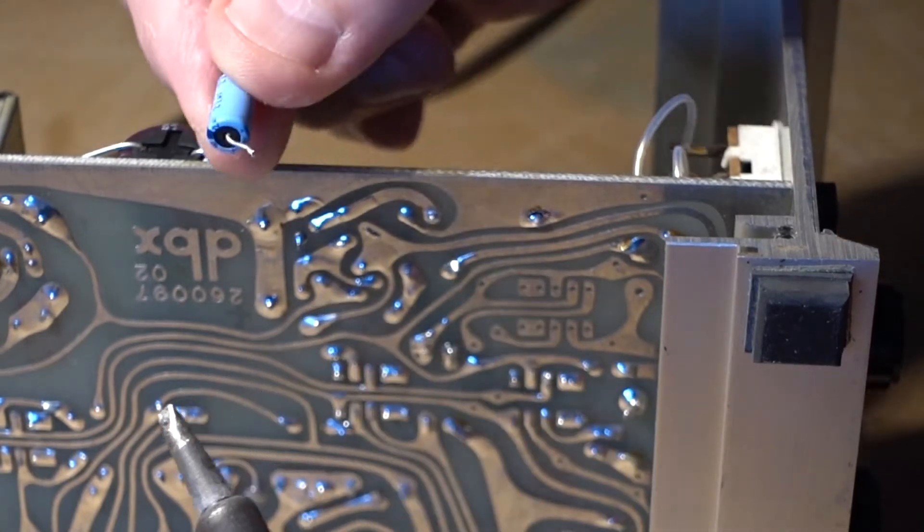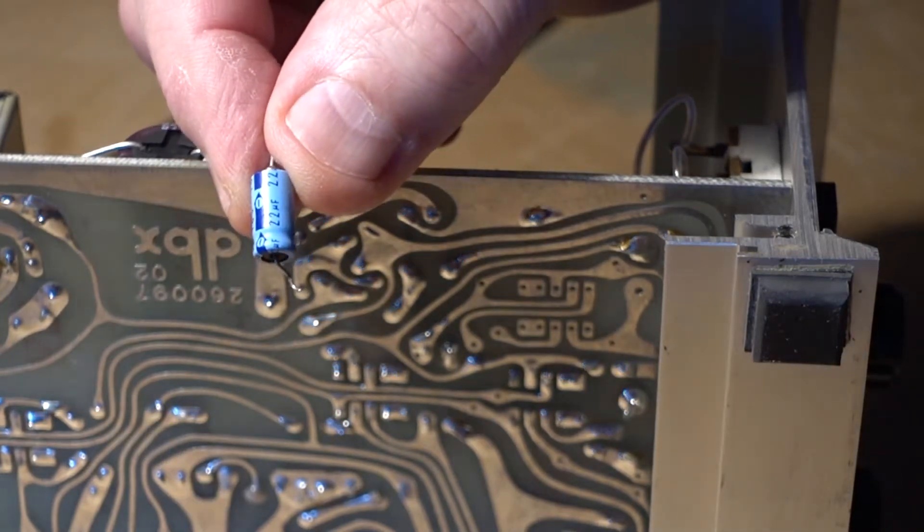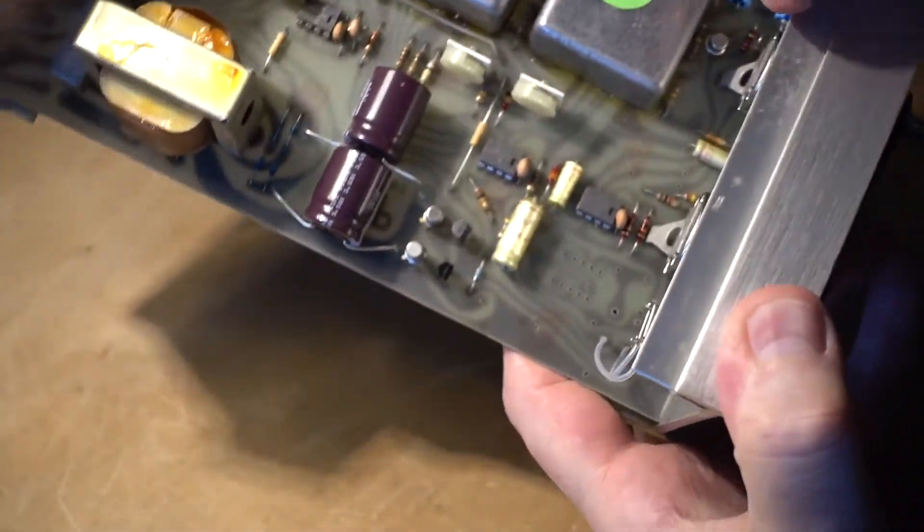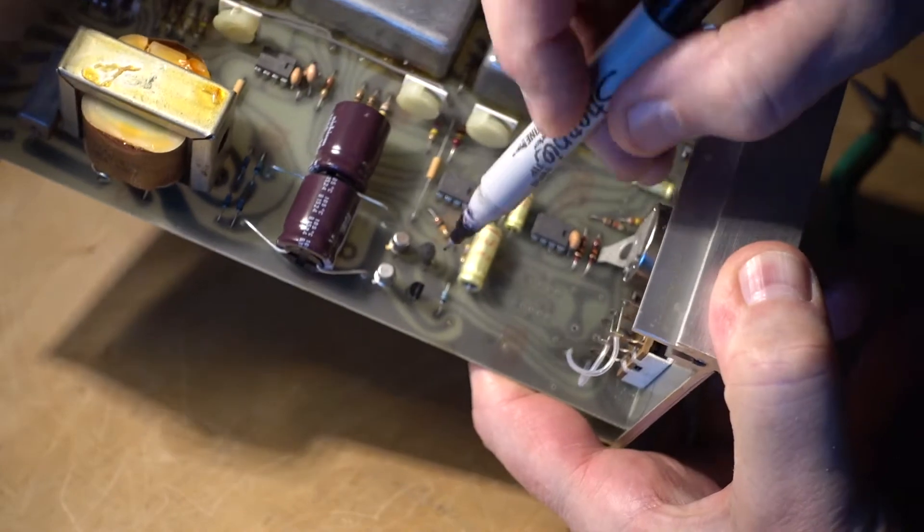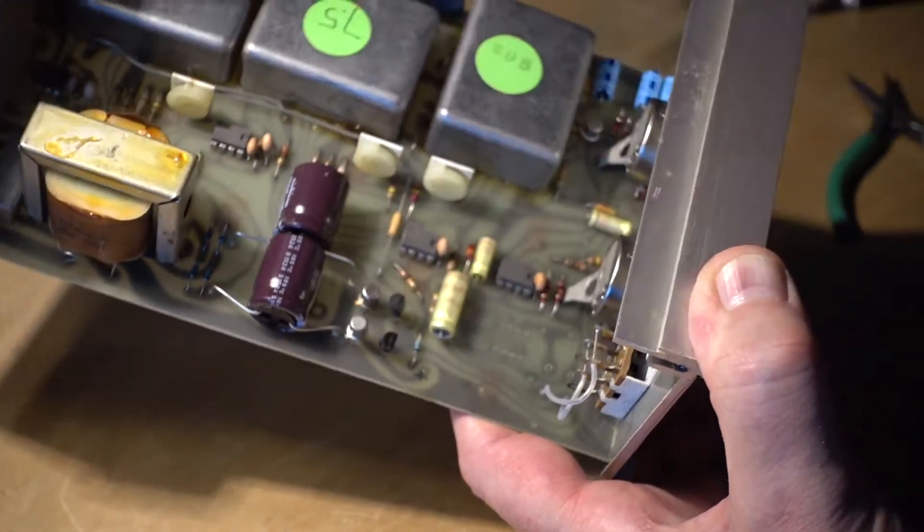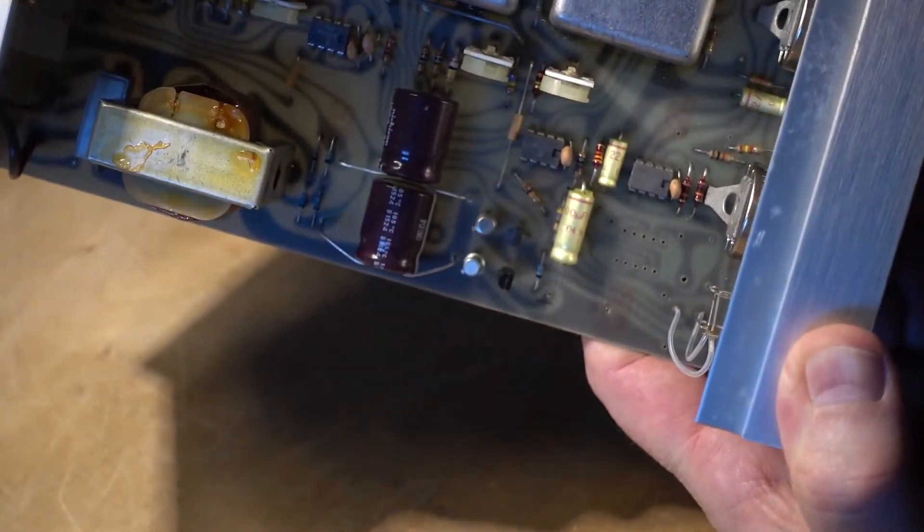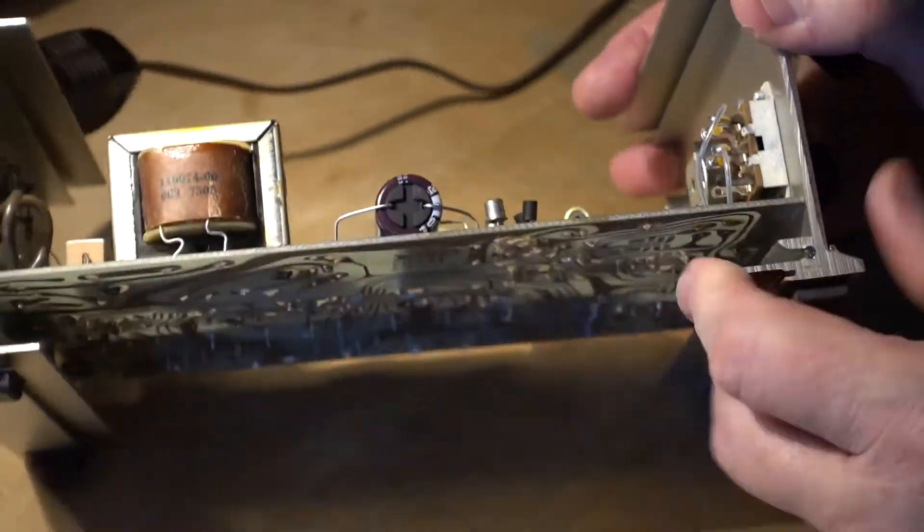Now we have to clean up the holes, make them ready for inserting the new capacitor. But before, always double check the polarity. Electrolytic capacitors are polarity sensitive. If it's not marked on the board, you can mark it with your marker.